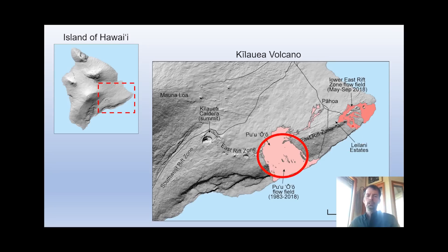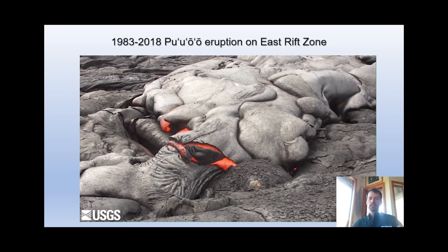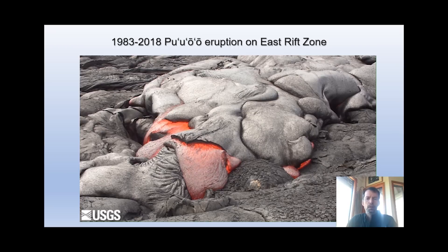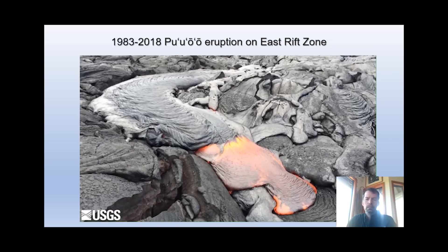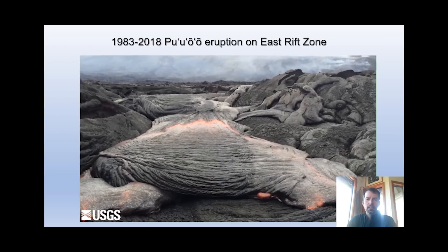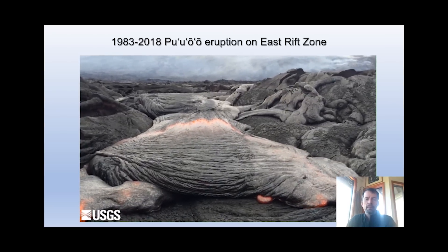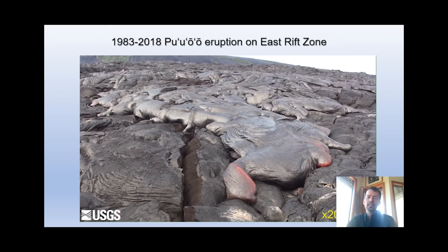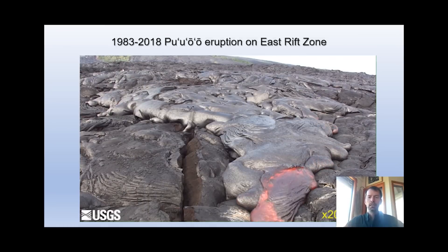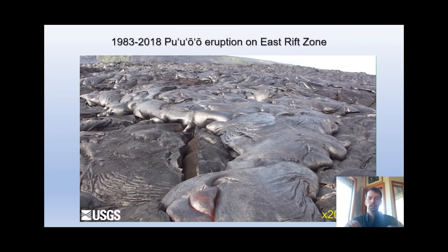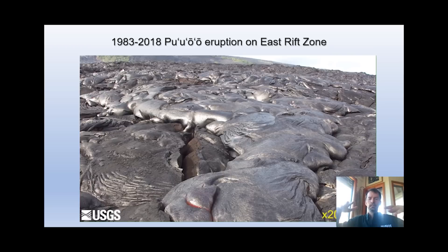First I want to talk about the Pu'u 'Ō'ō eruption. What you see is video we took about six years ago of a typical Pahoehoe lava flow - the type of lava that really typified most of the Pu'u 'Ō'ō eruption. You can see it's slow moving, very fluid, with this ropey texture - very classic textbook Pahoehoe lava. This segment is sped up by a factor of 20, showing how the lava oozes out in toes while the surface is inflating. These Pahoehoe flows move in fits and starts as lava extrudes along the edges, inflates, and then extrudes again.